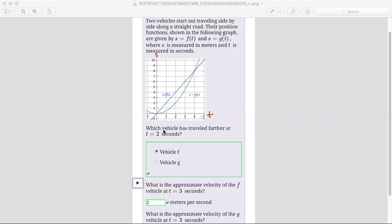The first question says which vehicle has traveled farther at t equals two seconds. So at t equals two would be right here. If we go up, then g of t will have gone two meters, whereas the car for f of t has gone four meters. So the car that's traveled further would be vehicle f because it will have traveled four meters where the other one has only traveled two.